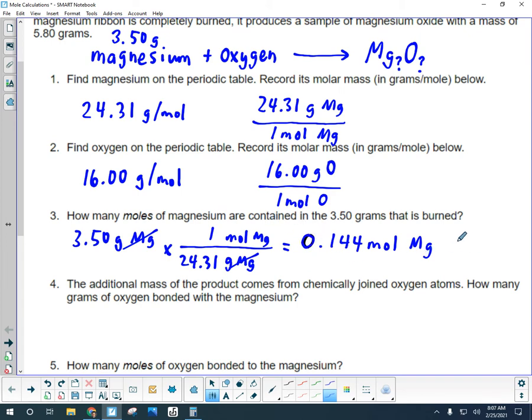And that is a quantity that's measuring how many magnesium atoms are involved in the reaction. So that is a way of quantifying how much magnesium is involved in the reaction.